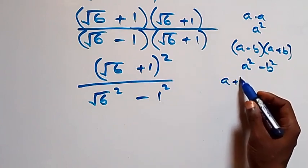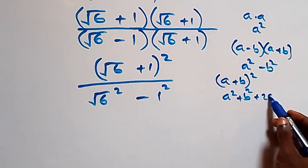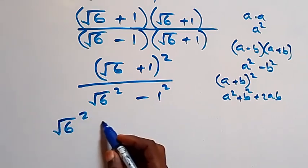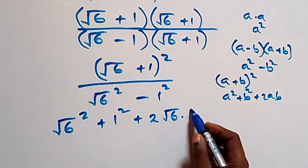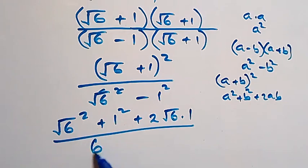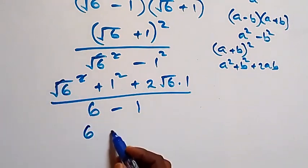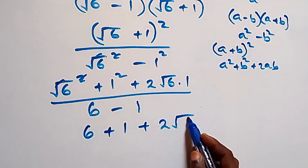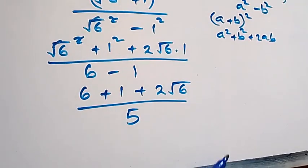Expanding the numerator using (a plus b) squared equals a squared plus b squared plus 2ab gives root six squared plus one squared plus 2 times root six times one. Simplifying: the square cancels the square root giving 6, plus 1 squared which is 1, plus 2 root six. The denominator becomes 6 minus 1, which equals 5.